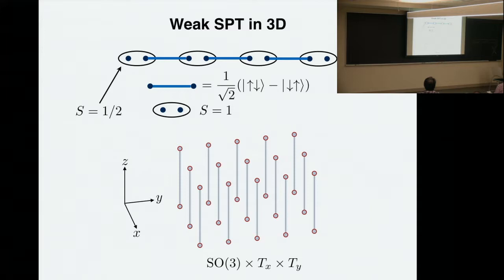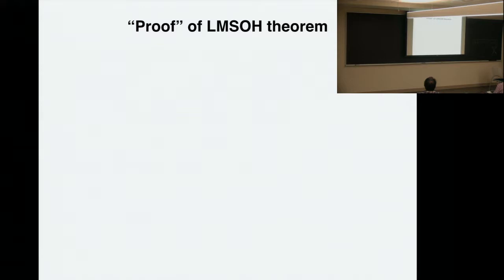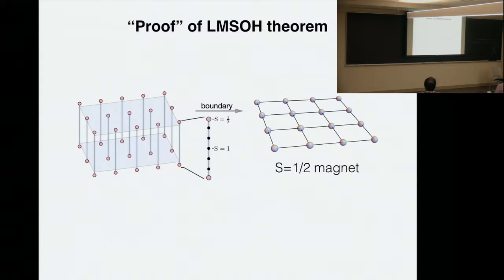Therefore we can interpret — it's not really a proof, it's an interpretation — the Lieb-Schultz-Mattis theorem as a consequence of the bulk-boundary correspondence, because we know that the boundary of a three-dimensional SPT phase has to be anomalous: it cannot have a unique gapped ground state preserving all symmetries. Therefore the three options follow: a gapped state with symmetry breaking, or a symmetric surface topological order — in this context just a spin liquid on the 2D surface. The three-dimensional bulk phase serves as a theoretical tool to understand the Lieb-Schultz-Mattis theorem in this context.